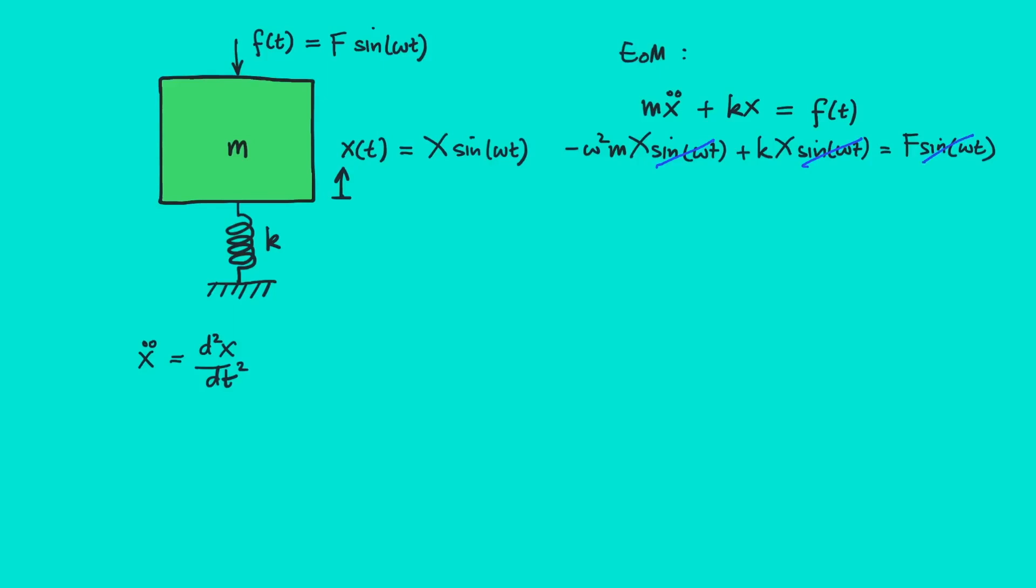And we want X over F, so we have 1 over (k - ω²m). So we've got X/F which tells us the vibration amplitude of the system over a unit force. But we can write down this expression in terms of the natural frequency of the system.